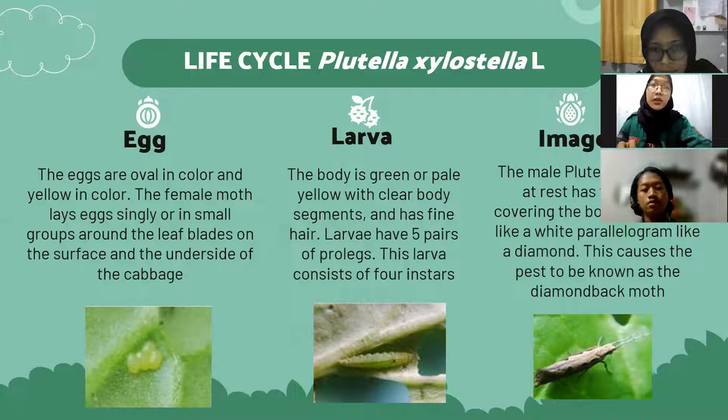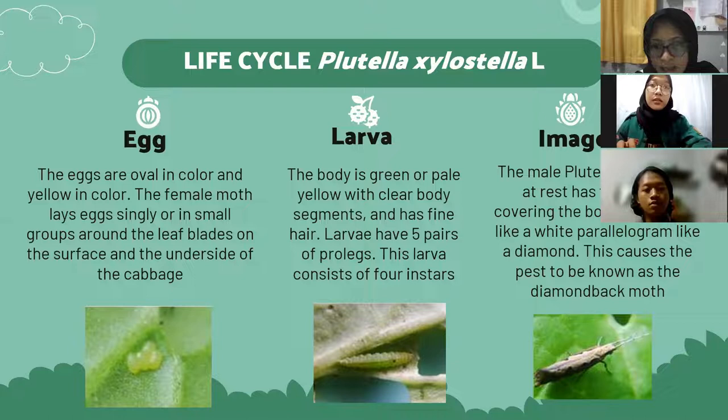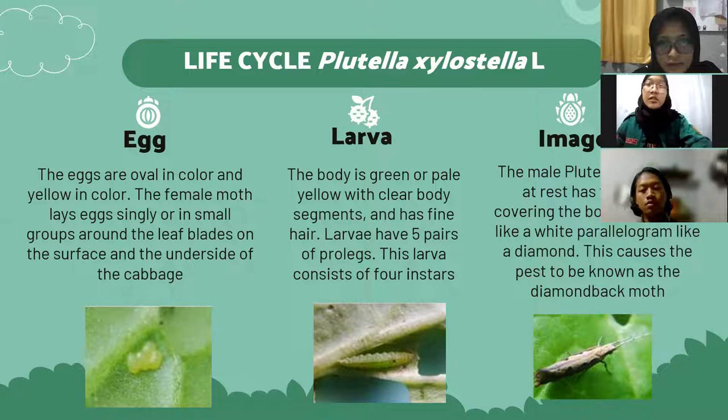Second, the larvae stage: the body is green or pale yellow with clear body segments and fine hairs. Larvae have five pairs of prolegs. This larval stage consists of four instars. The male Plutella xylostella at rest has four wings covering the body and it looks like a white parallelogram like a diamond, which is why the pest is known as the diamondback moth.